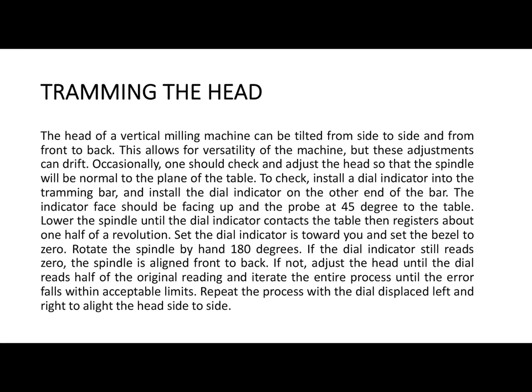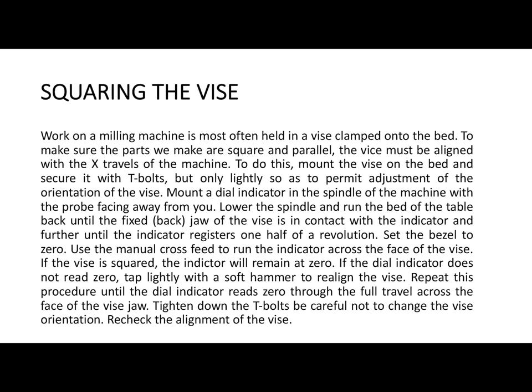Tramming the head means the head of the vertical machine can be tilted from side to side and from front to back. Depending on the task, you may be required to tilt it — for example, if you want to drill at an angle. Accordingly, the machine head can be adjusted. Typically in our case we leave it vertical, since we are doing a basic shape.